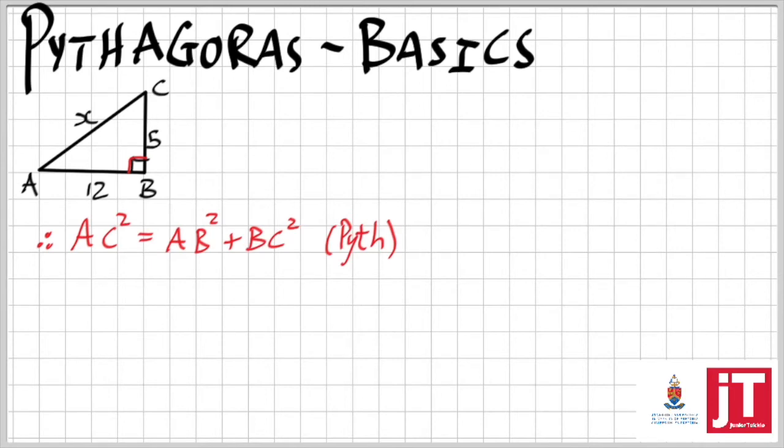When we look at that length of AC, we can now substitute our values in. X squared is equal to 12 squared plus 5 squared. You might ask, can I not just straight go to this step? You are more than welcome to go for it. Please just remember your reason. If that's going to be your first step, then you have to write that next to that. Remember, statement reason.